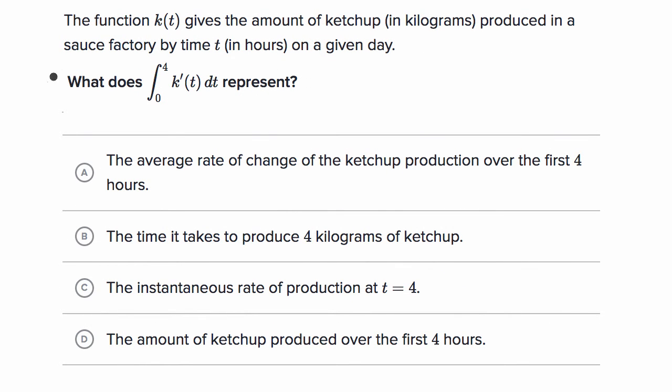So here we're told the function k(t) gives the amount of ketchup in kilograms produced in a sauce factory by time t in hours on a given day. So this is really quantity as a function of time. It isn't rate. What does the definite integral from zero to four of k'(t)dt represent? Once again, pause the video and see if you can work through it.